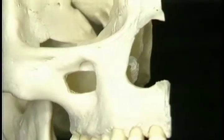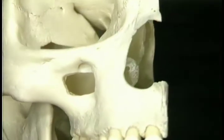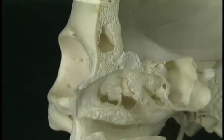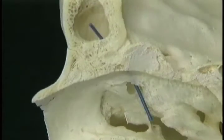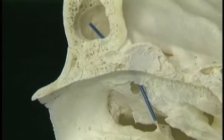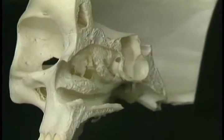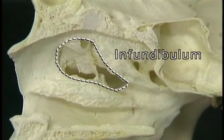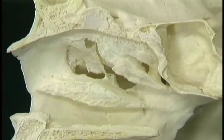The frontal sinus opens into the nasal cavity by way of a narrow passage, the frontonasal duct. The frontonasal duct starts above the uncinate process and runs upward and forward to reach the frontal sinus. The frontal and maxillary sinuses open into the nasal cavity not directly, but into a narrow side chamber called the infundibulum. The infundibulum isn't apparent in a bony specimen; we'll see it when we look at the soft tissues.